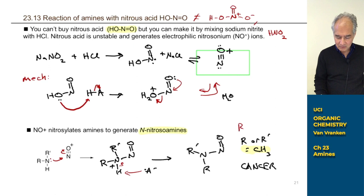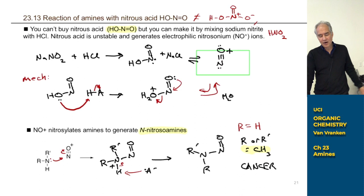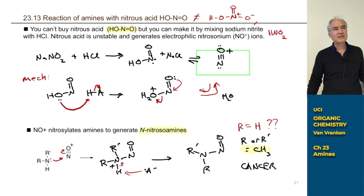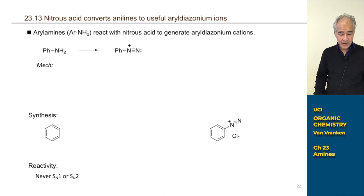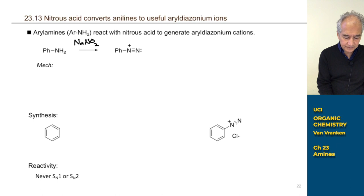What we're going to talk about now is what happens in the situation where one of these R's is an H-group. Then we're going to see interesting chemistry. That's when we're going to start to see interesting stuff happen. Let's talk about when one of the R's is an H-group and the other R is an aromatic ring, because that's when we've got interesting chemistry going on. What we're going to discuss is what happens if we take an aniline and mix it with this mixture of sodium nitrite and HCl.